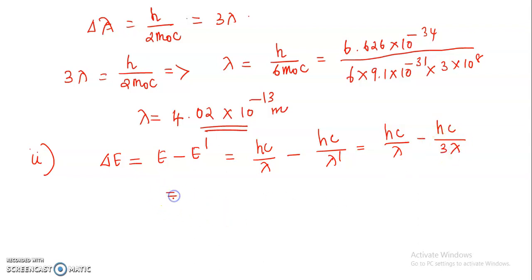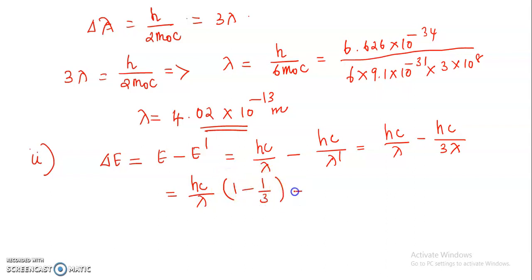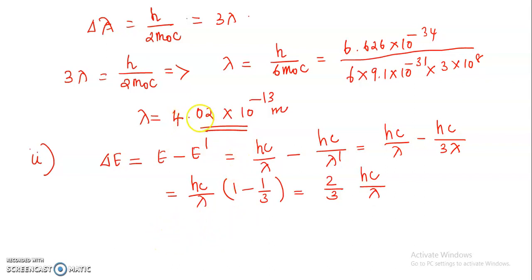Taking common terms outside: delta E equals HC divided by lambda, multiplied by (1 minus 1/3), which equals 2/3 multiplied by HC divided by lambda. From the previous section, the value of lambda was found to be 4.02×10⁻¹³ meters.